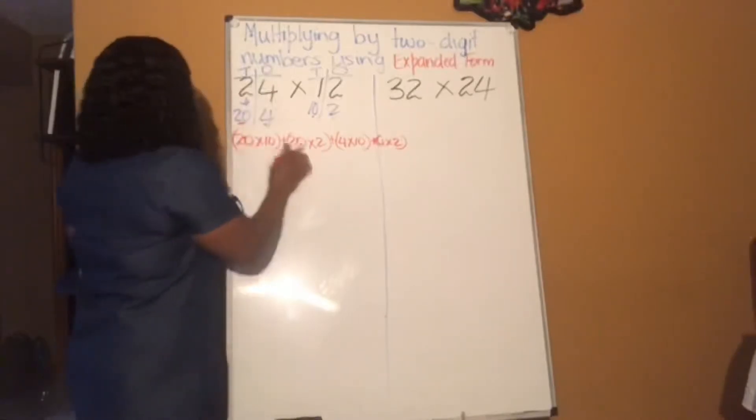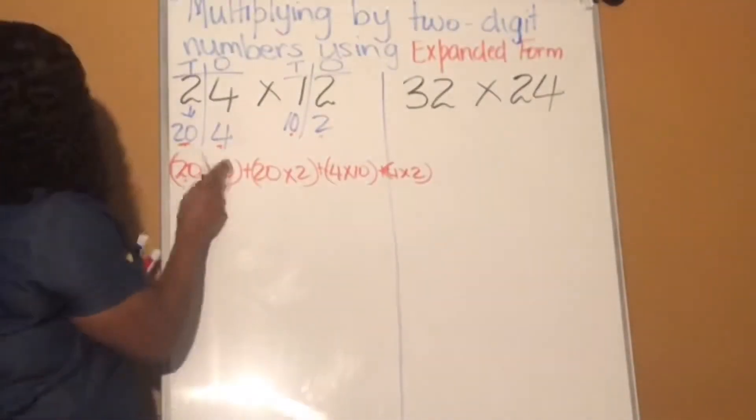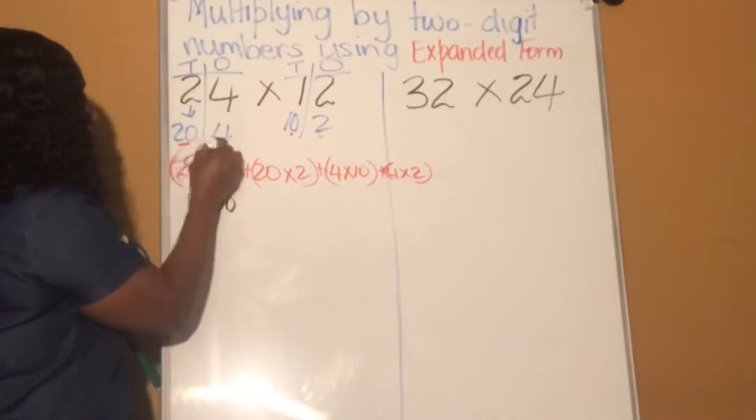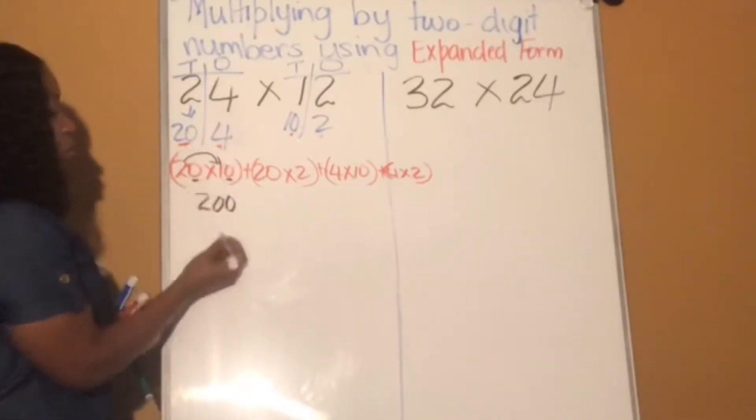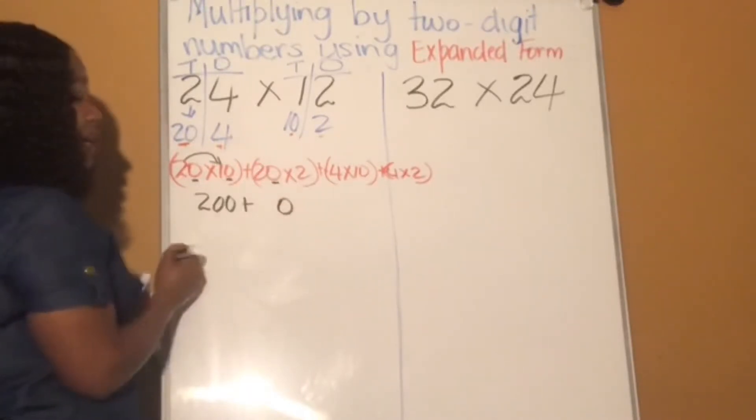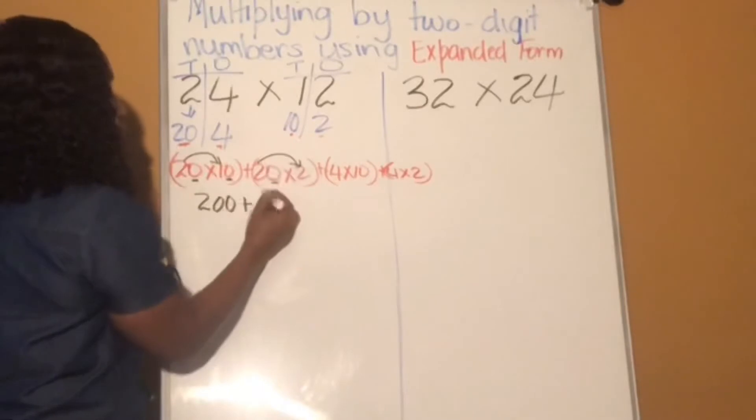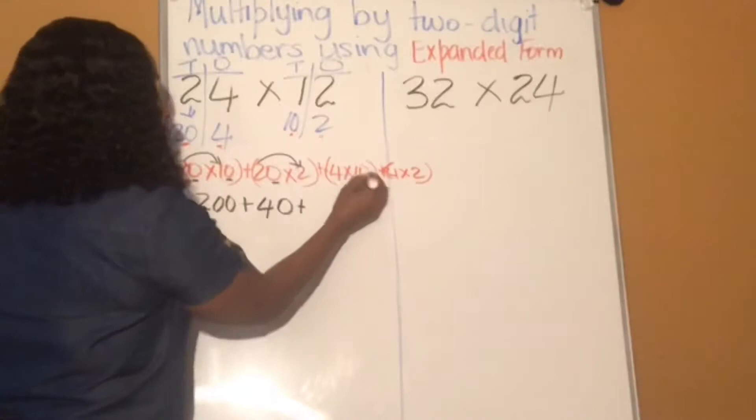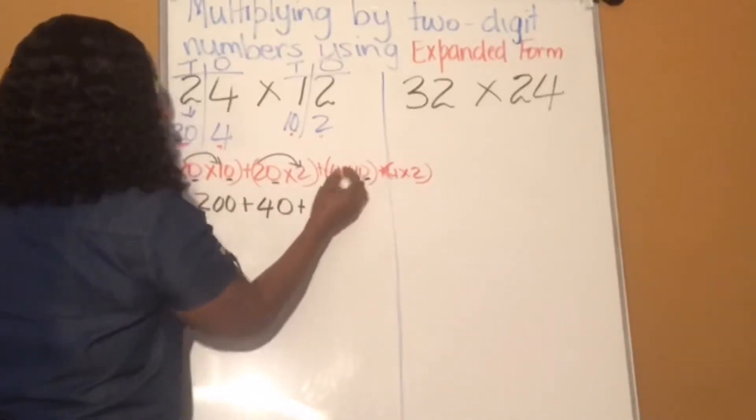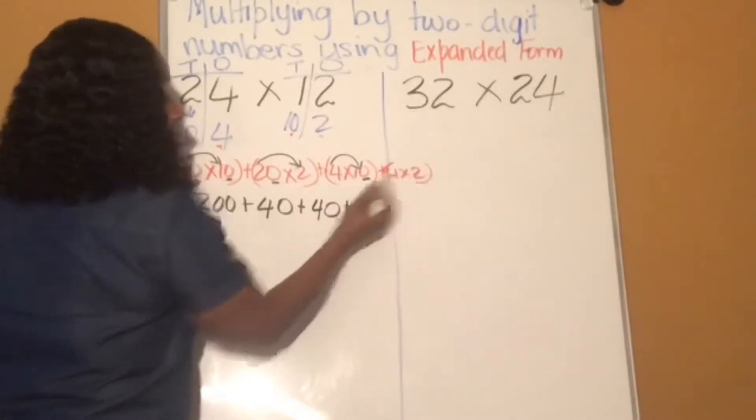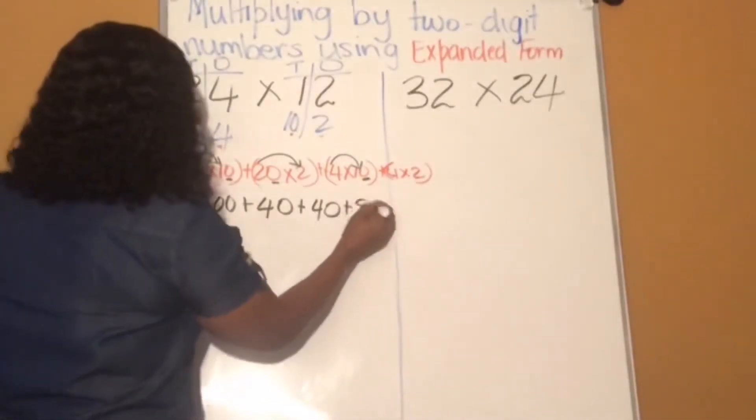Now we're going to multiply what is inside each bracket. 20 times 10, we have two zeros. So we write them down. And then we multiply 2 times 1, that's 2, plus 20 times 2. We have one zero. We write it down. Then 2 times 2, that's 4, plus 4 times 10, that's one zero. Then 4 times 1 is 4, plus 4 times 2, there's no zero, and we get 8.